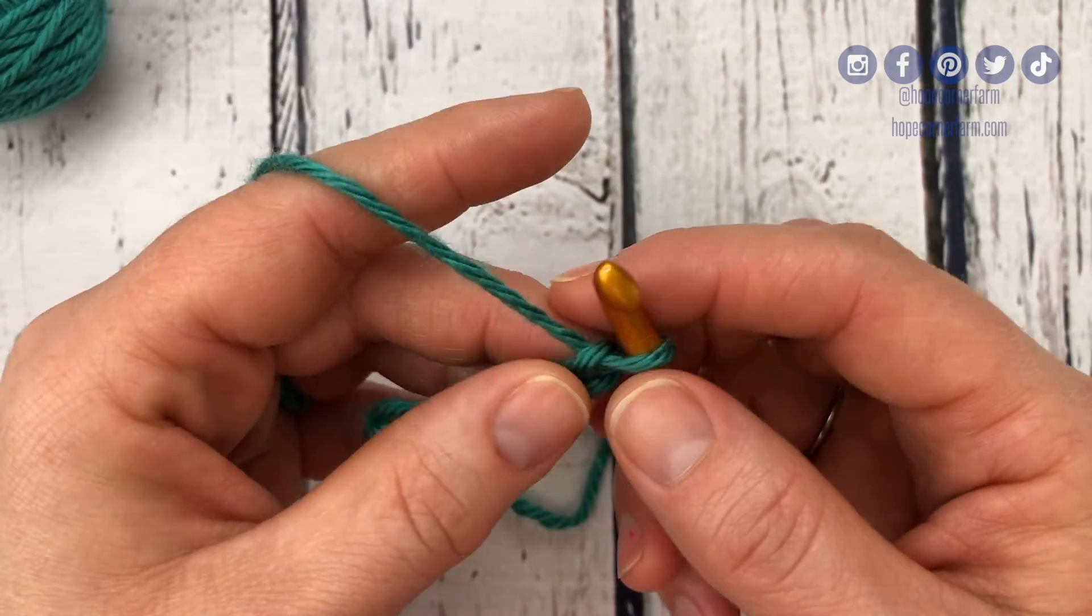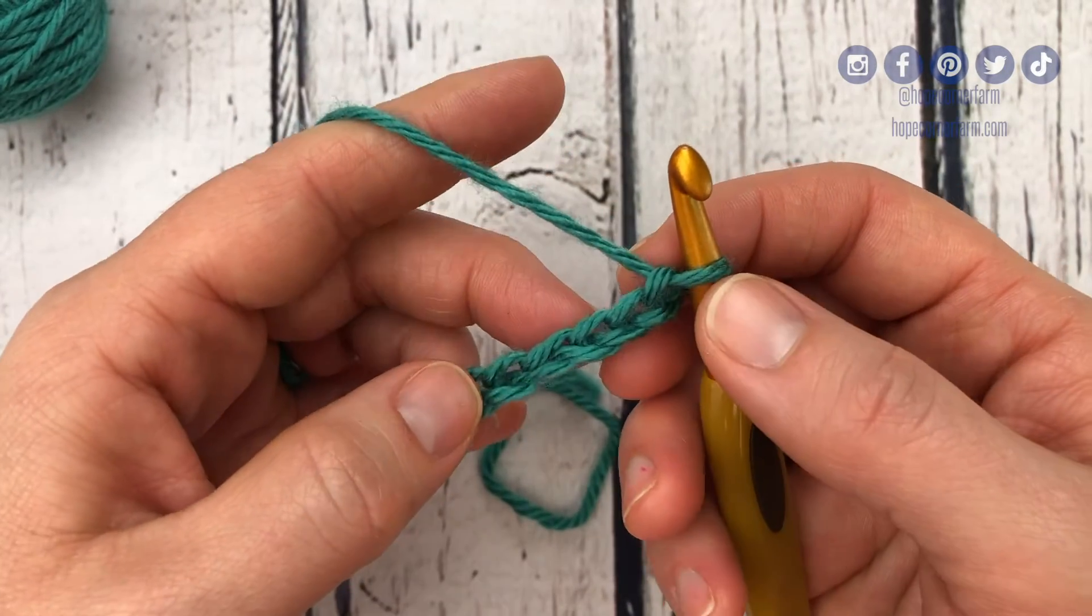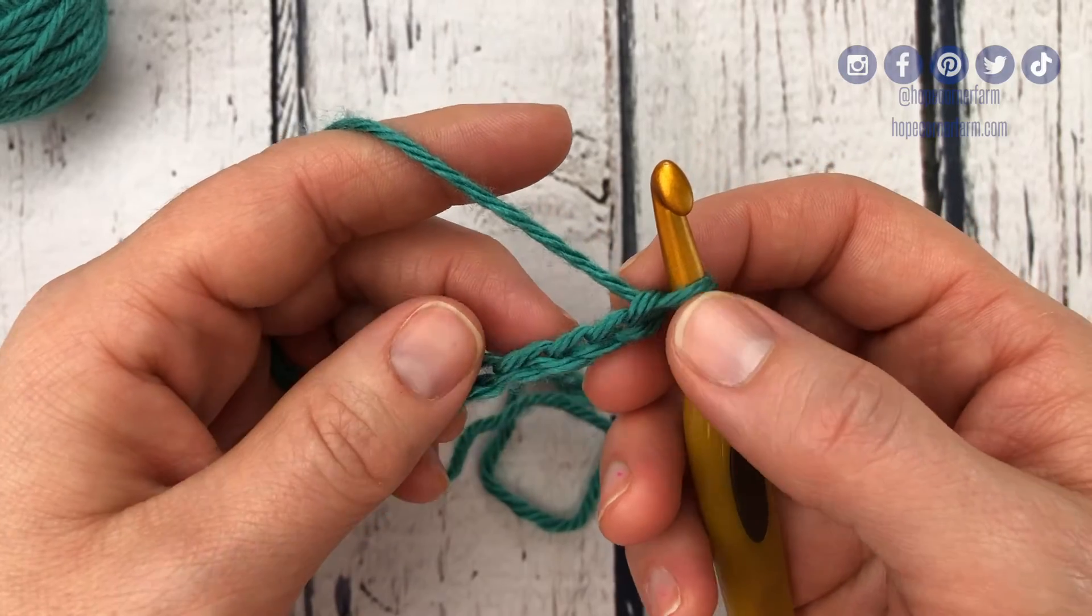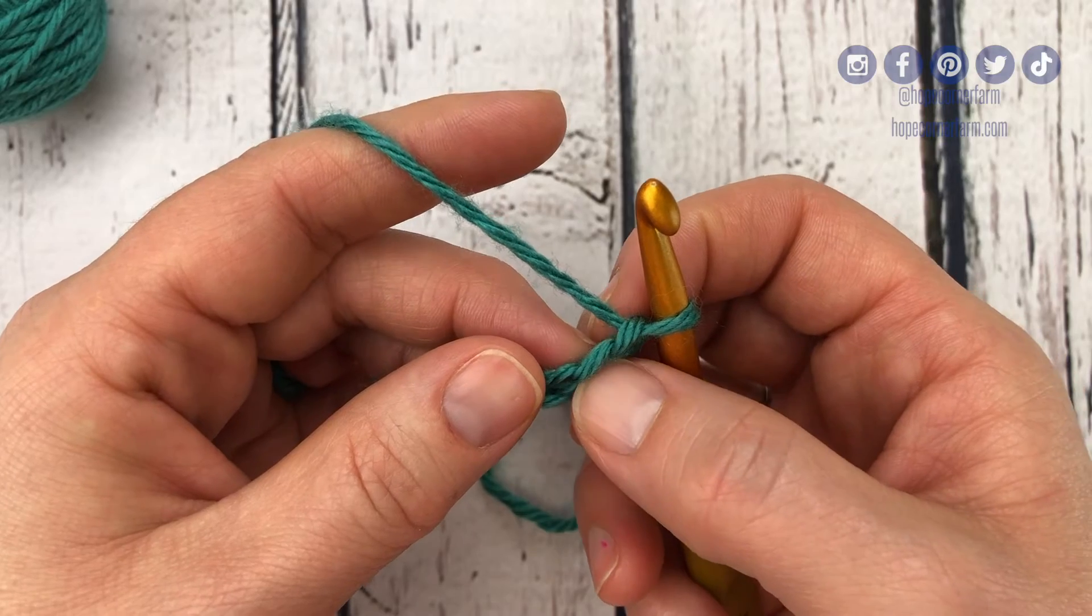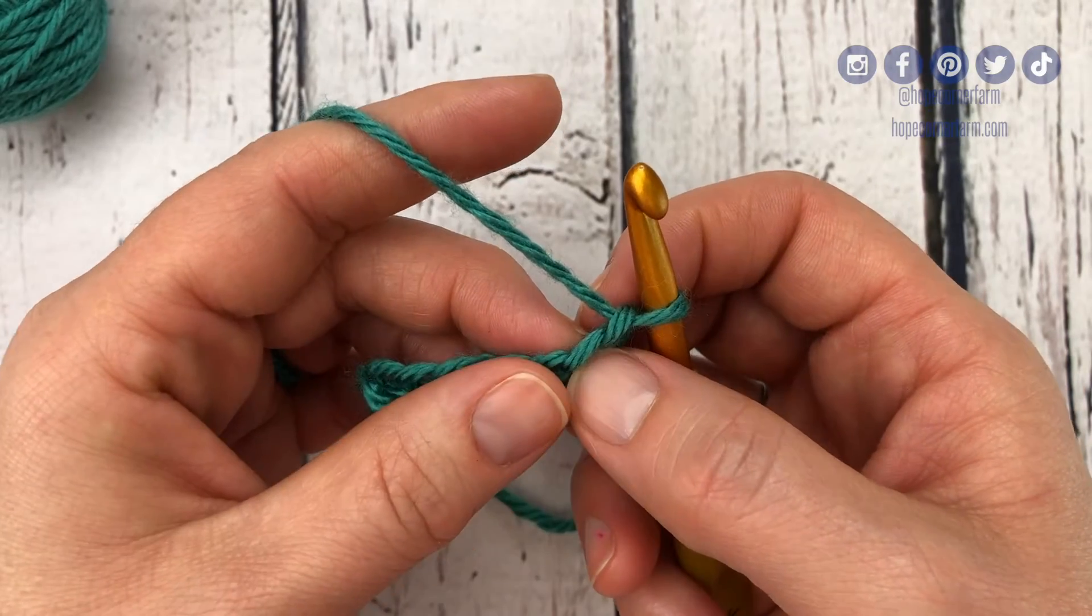To begin, single crochets usually start on a chain in the second loop from the hook. So what that looks like is not this one but this one. We're gonna go right in here.